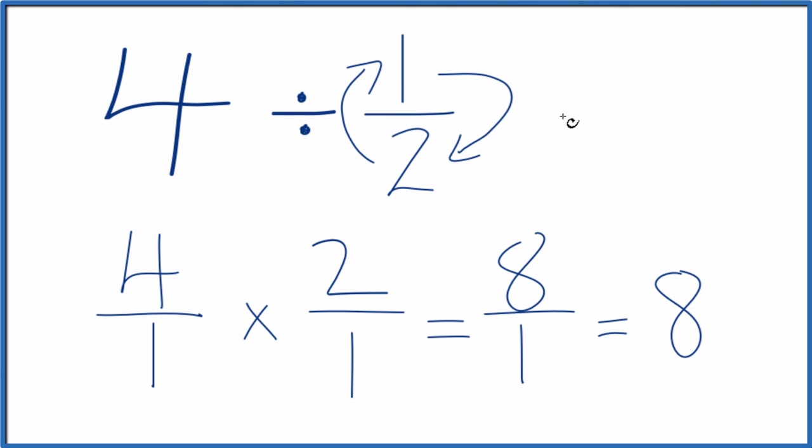So when we divide 4 by 1 half, we get 8. If you took 8 and multiplied it by 1 half, you get 4. So we did this correctly.